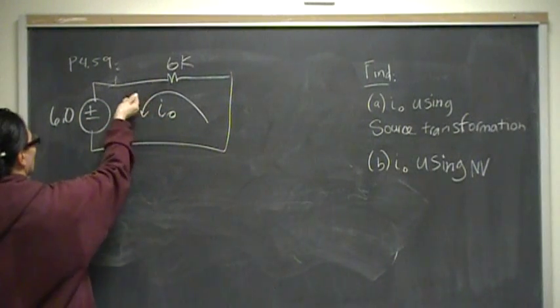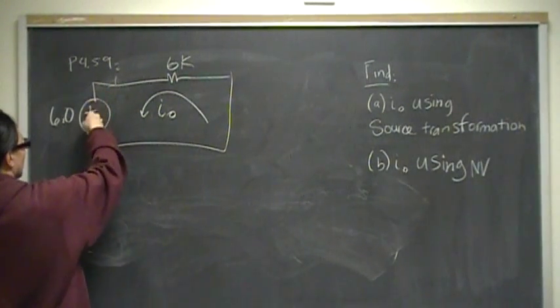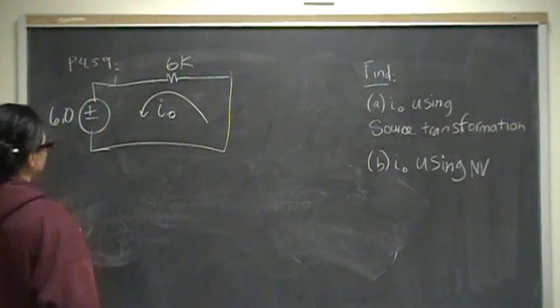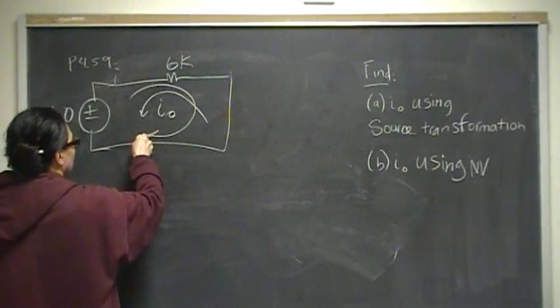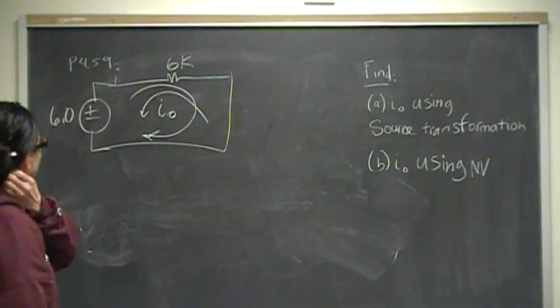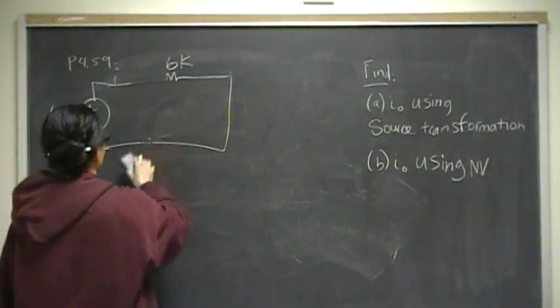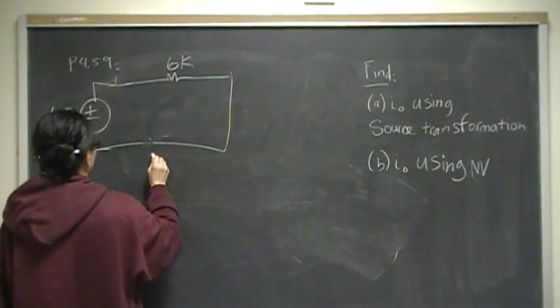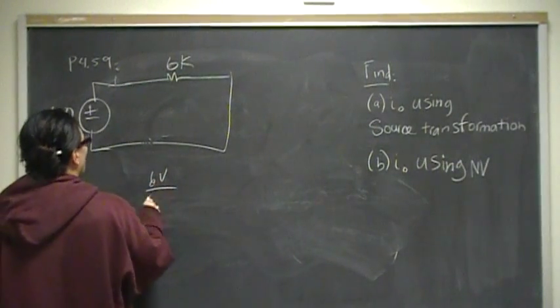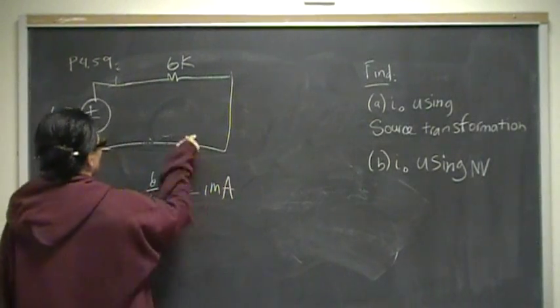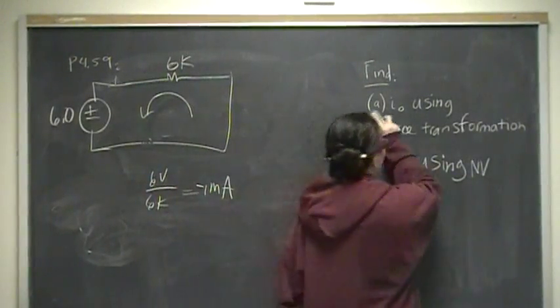So 2.7 plus 2.3 is 5, plus 1 is 6.0. That's all the same thing as 6k, and they wanted us to find I not. When we solve it, since the current I sub not is defined to be in the reverse direction, it's going to be the negative of V over R. So that is just math you can do in your head - 6 volts over 6 kilos is 1 milliamp. Since we're going in this direction, it would be negative 1 milliamp. So for part A, the answer is negative 1 milliamp, and part B should be the same.